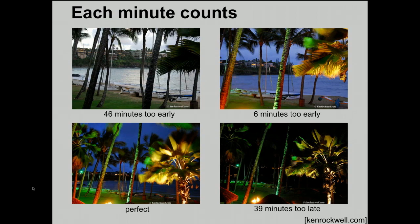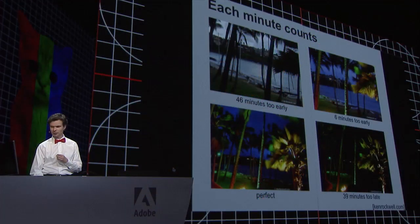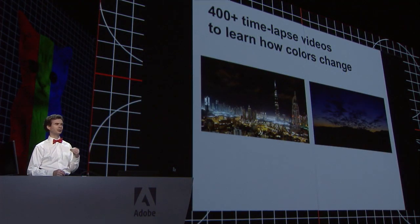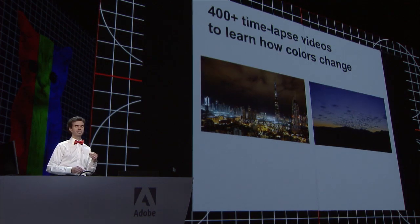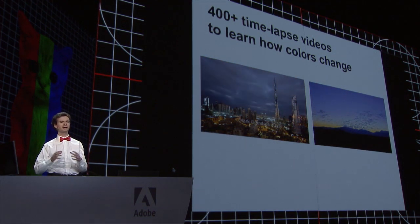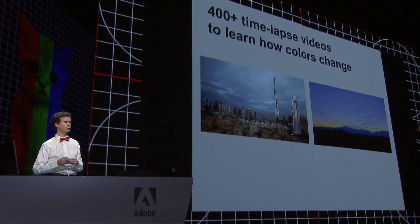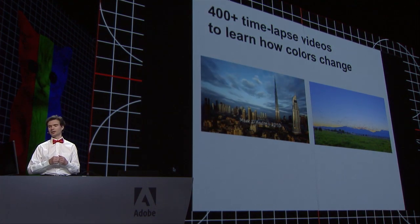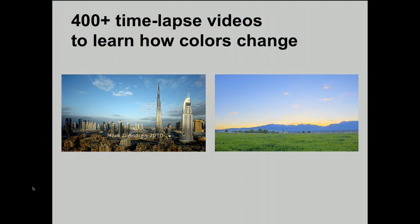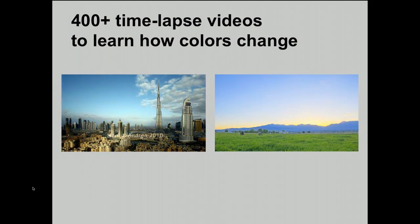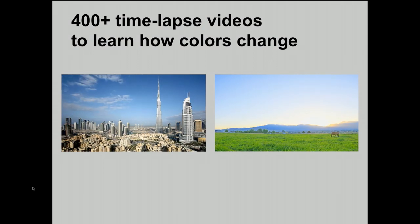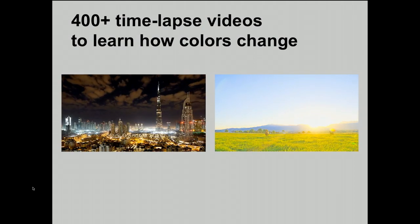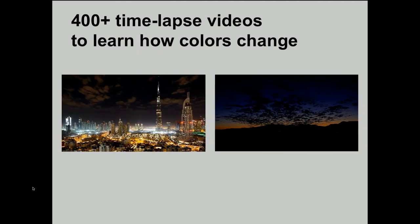We wanted to help, so we designed an algorithm to change the time of day in a picture. The first step was to teach our algorithm about the colors in the world. We collected many time-lapse videos — more than 400 — in many different places all over the globe. These time-lapse videos show us cityscapes, countryside, and how the colors change during the day. In the demo, we use this information.